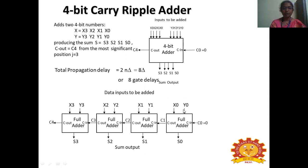The chain operates as follows: X0, Y0, and C0 are added to give S0 and C1. C1 feeds the next full adder with X1 and Y1, producing S1 and C2. C2 feeds the next with X2 and Y2, giving S2 and C3. Finally X3, Y3, and C3 produce S3 and C4. The final output is S3, S2, S1, S0 and C4, taking 8 gate delays total.